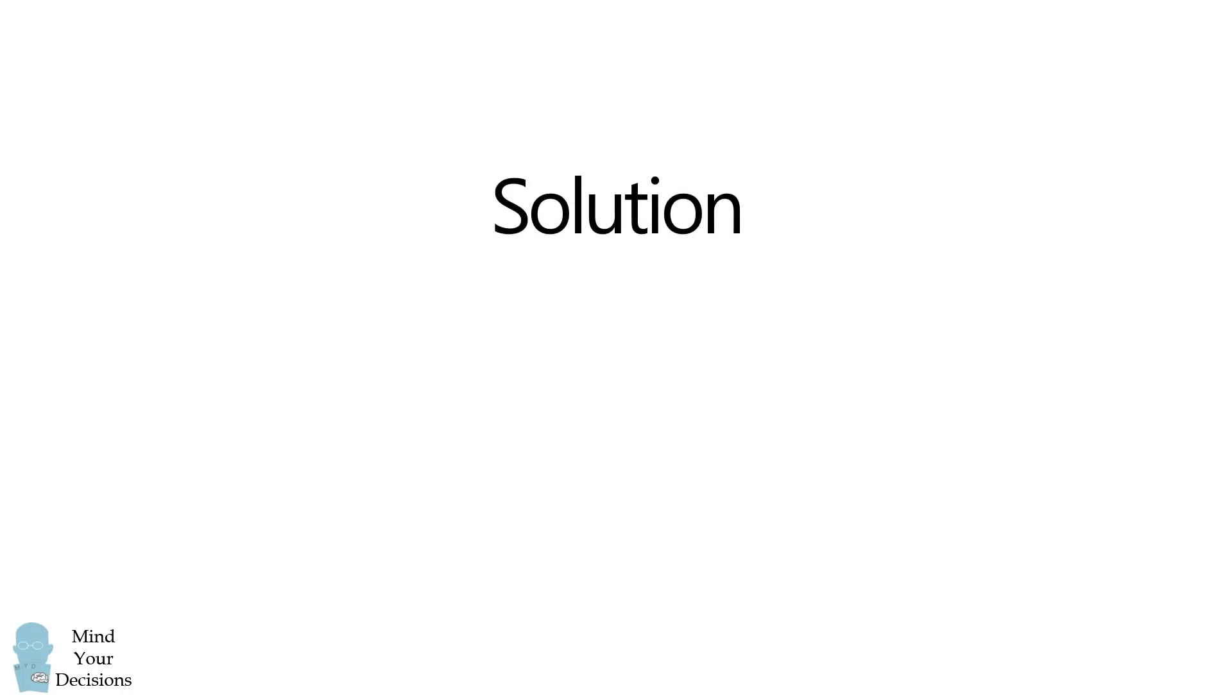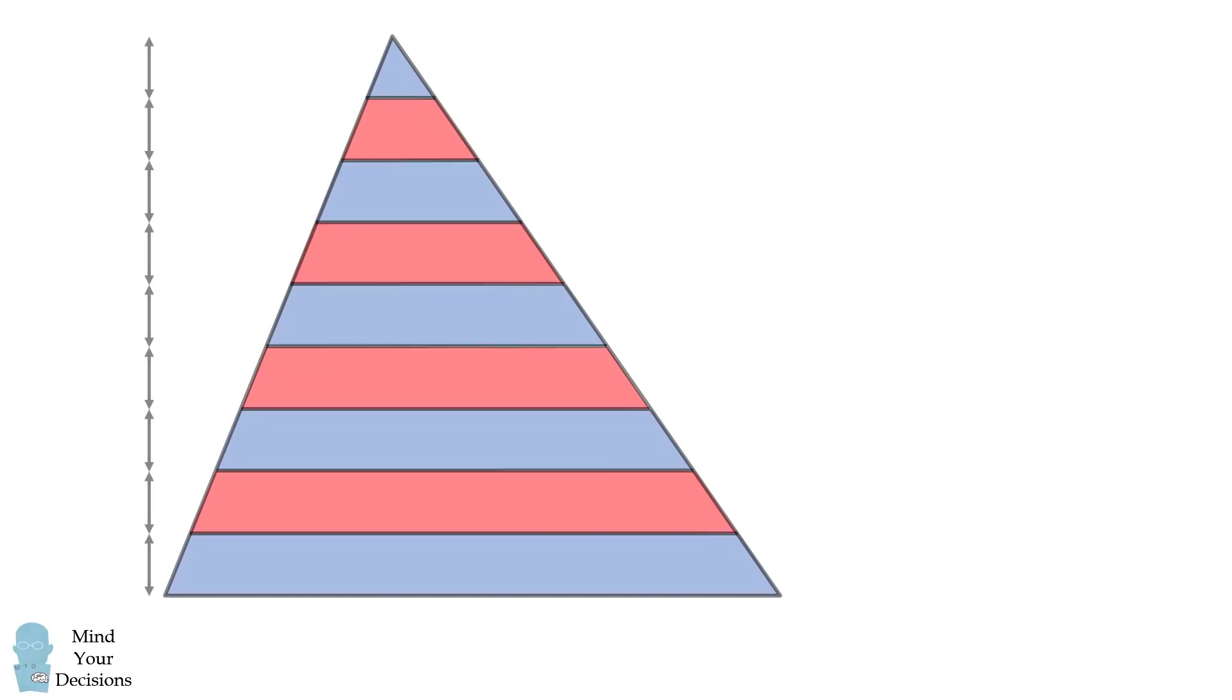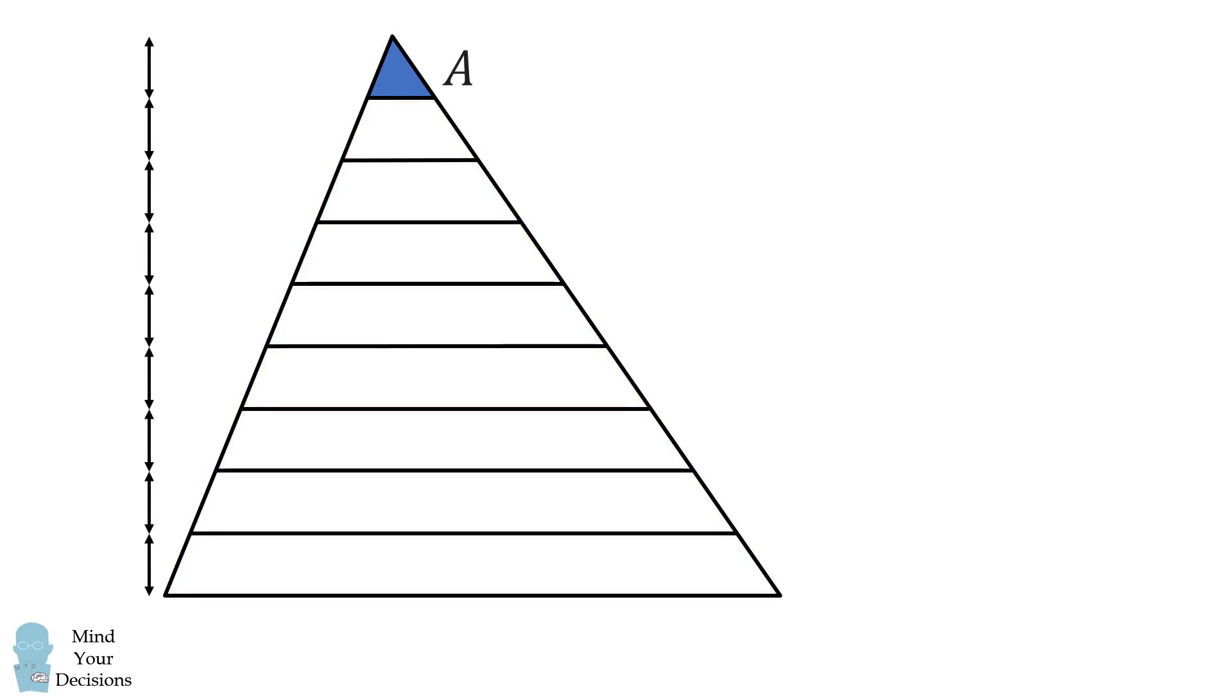Now let's solve the problem. Suppose the smallest triangle at the top has an area that's equal to A. What's the area of this red stripe? It will be equal to the area of this larger similar triangle minus the area of the small triangle. Suppose the small triangle has a height equal to h. Then the next triangle has a height that's equal to 2h.